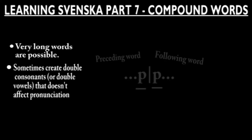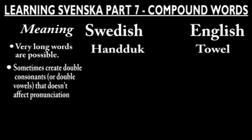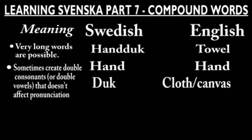For example, the word Handduk. This word is a composition of the words Hand and Duk. This type of double consonant does not affect the pronunciation of any vowels. Let's take a look at some more examples of this.